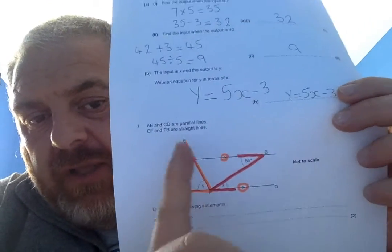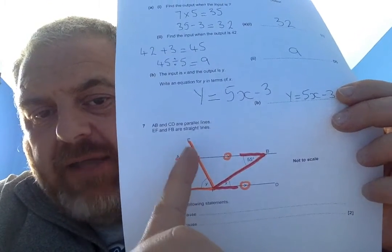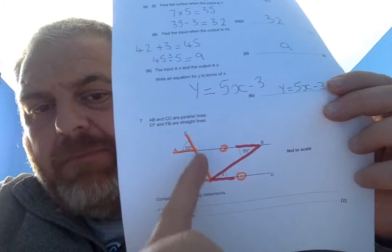And if I look at, actually, it's a different colour. I'm not sure if you'll see that. My y and 70 have got an upside down and backwards letter f. Now, when I took my exams, you could just call them f, z and c angles, but you need to know the actual name.